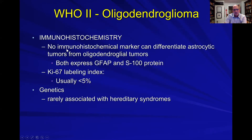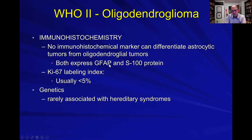For immunohistochemistry, there's no marker that differentiates them perfectly from other tumors. These also can express GFAP and S100. The KI-67 is lower, consistent with grade two. They're rarely associated with any sort of hereditary syndromes.